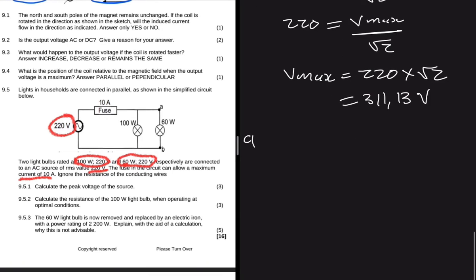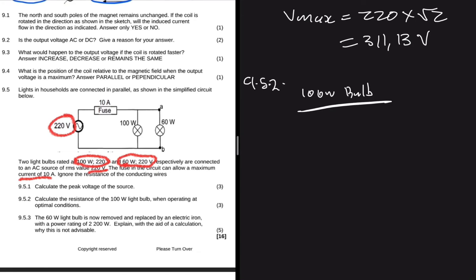And then for 9.5.2 it says calculate the resistance of the 100 watt light bulb when operating at optimal conditions. So let's go to the 100 watt bulb and look at the information we have so that we can answer our question. It's rated 100 watts, so we already know that the power average will be equal to 100 watts. What else do we know? We know that it needs 220 volts because that's given on the rating.